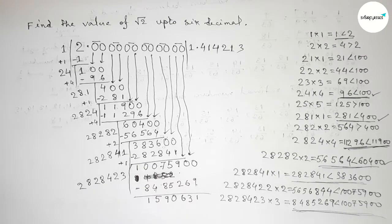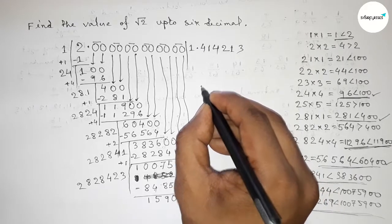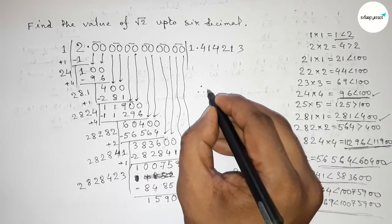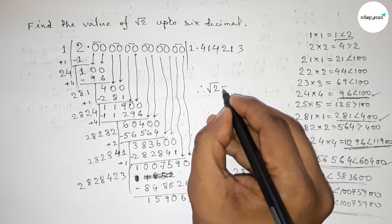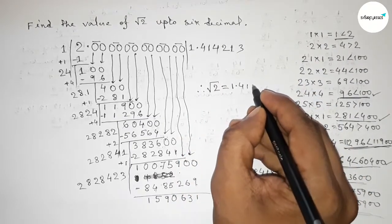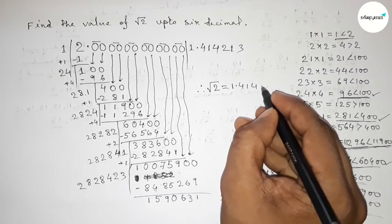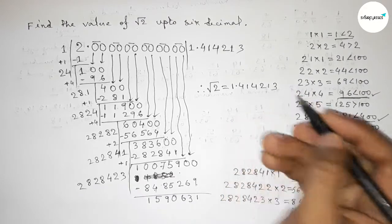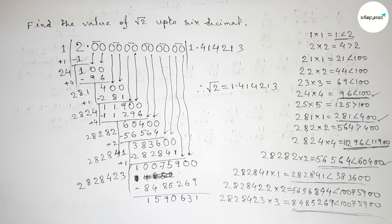So this is the process to find out the value of root 2 up to 6 decimal places. The value of root 2 equals 1.414213. That's all — thanks for watching. If this video is helpful to you, please share it with your friends. Thanks for watching.